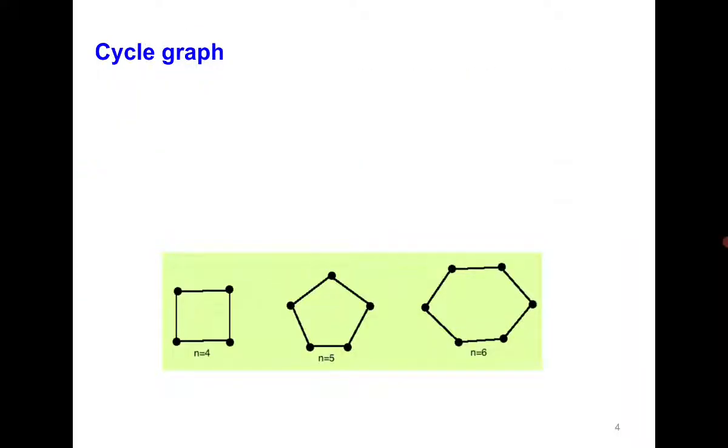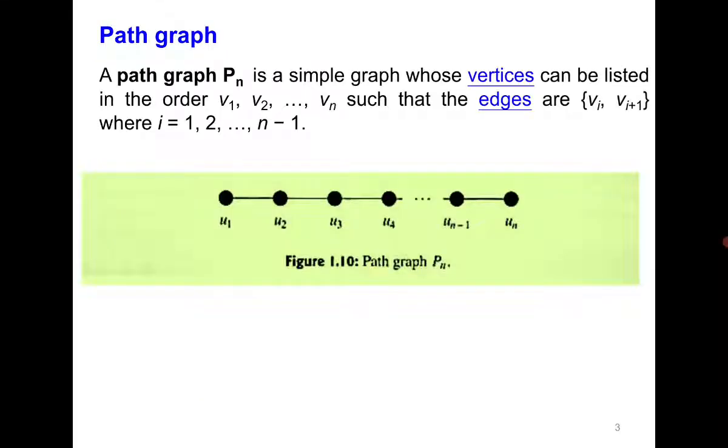Next is the cycle graph. You can see the cycles now. One important thing is that path graph is represented as Pn where n is the number of vertices. So if I talk of P5 it means there should be 5 vertices, a graph of length 5.